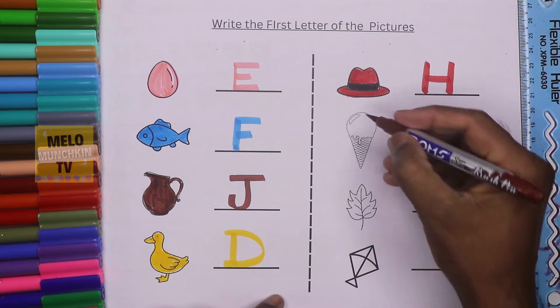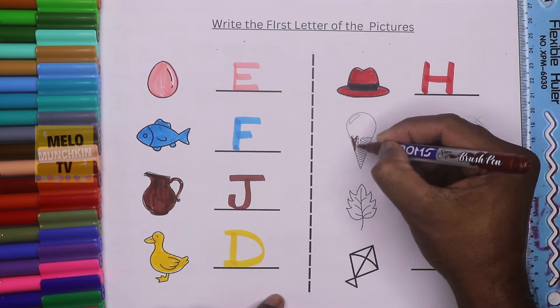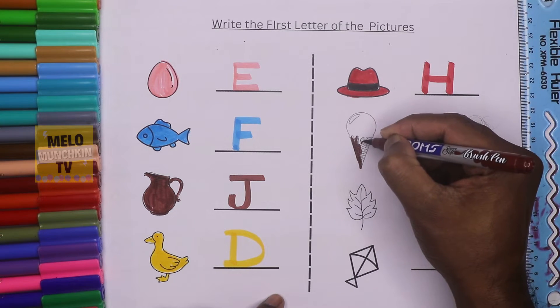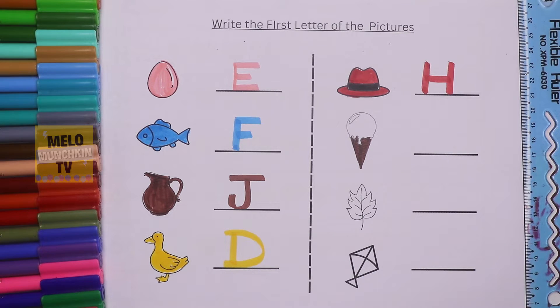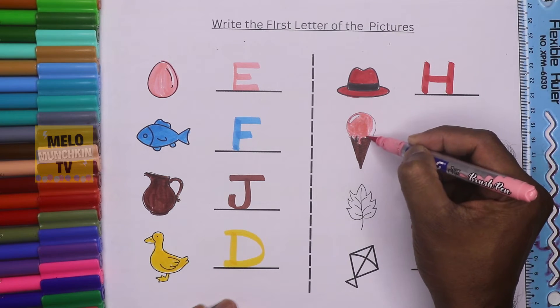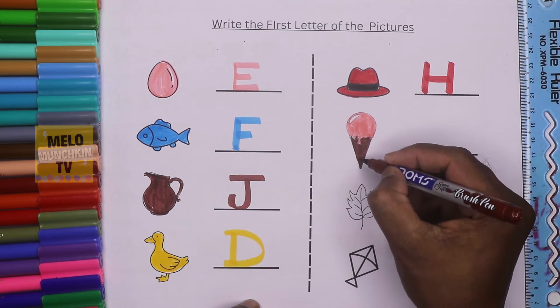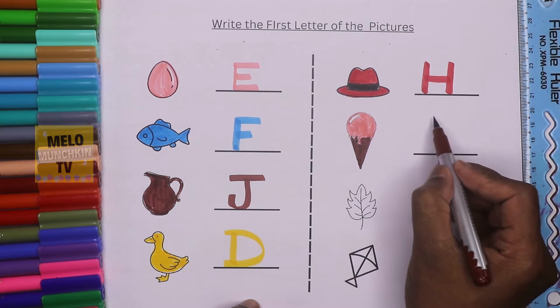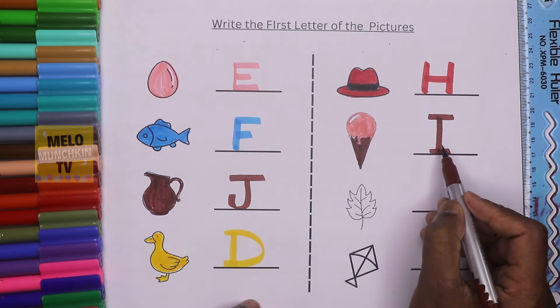so I'll color the ice cream cone with brown color like this, and then I'll use light pink color to color the top. This is ice cream, and the first letter is I. I for ice cream.